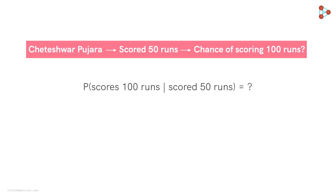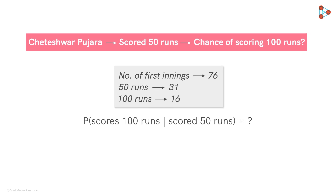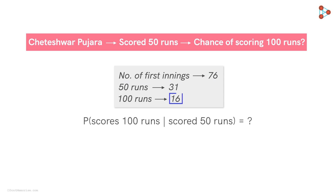To find this probability, we need some information about his past performances — like how many times has he converted a 50 into a 100 while batting in the first innings. This data is easily available on the internet. Based on our research, it turns out that out of 76 first innings in which he has batted, 31 times he has scored half centuries, and 16 out of those 31 times he has gone on to score 100 runs or more.